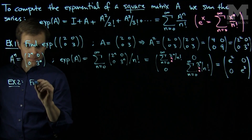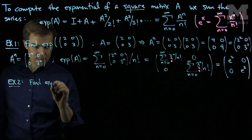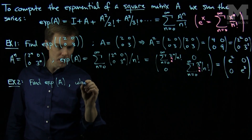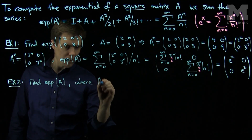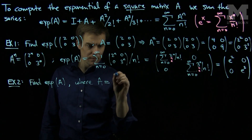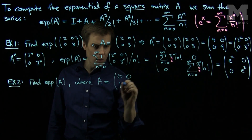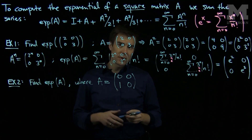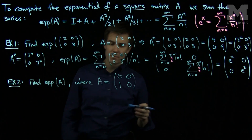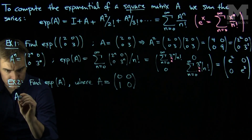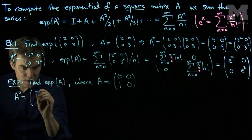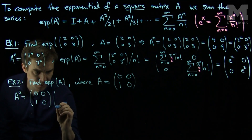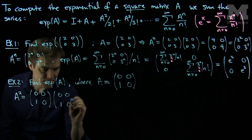Let's find the exponential of A where A is the matrix [0, 0, 1, 0]. Again, in order to compute the exponential of this matrix I'll need to find every single power of this matrix. So let's look at A squared first. A squared will be [0, 0, 1, 0] times [0, 0, 1, 0].